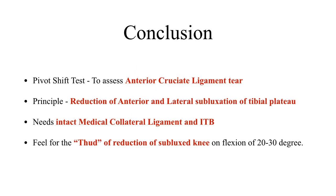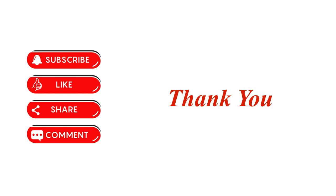To conclude, the pivot shift test is used to assess anterior cruciate ligament tear. The principle is to achieve reduction of the anterior and lateral subluxation of the tibial plateau that occurs following ACL rupture. Intact medial collateral ligament and iliotibial band are needed, as these are the structures which reduce the subluxed tibial plateau. Feel for the thud of reduction of the subluxed knee on flexion at 20 to 30 degrees, which is pathognomonic of the pivot shift test. Thank you all, and we'll meet you soon with my next video.